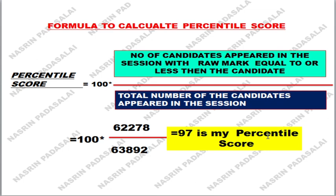So how is the percentile score calculated? The percentile score is also called the NTA score — don't confuse NTA score with percentage. NTA incorporates the percentile concept and releases the NTA score. The formula is: 100 × (number of candidates who appeared in the session with a raw mark equal to or less than that of the candidate) ÷ (total number of candidates who appeared in the session).